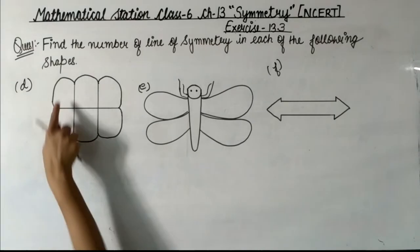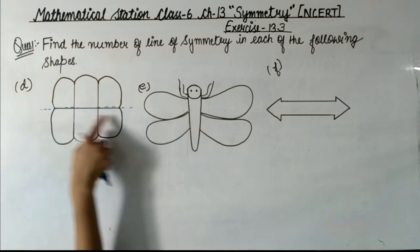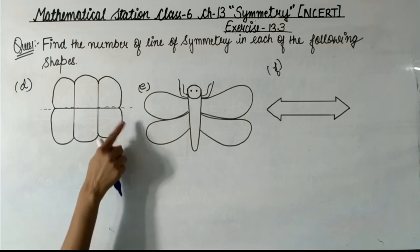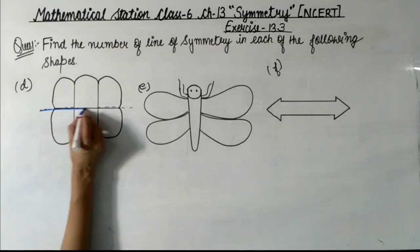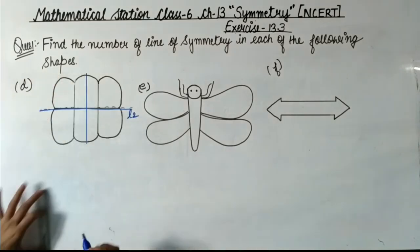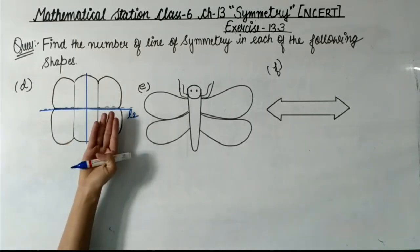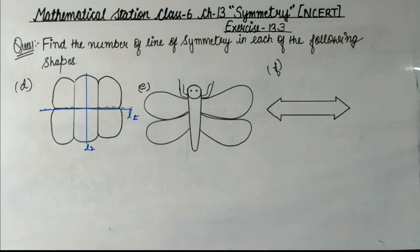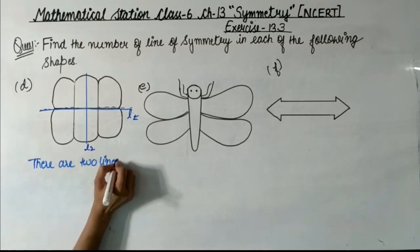Now next is Part D. In this shape we draw the first line of symmetry L1 by folding the three boxes. The second line of symmetry is drawn in the center, folding the two circles. We can draw two lines of symmetry in this figure.